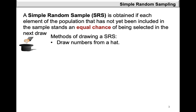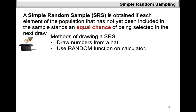Once you have these numbers, you can identify those elements from the population that are now going to consist of your sample. In the second method, you can make use of the random function on the scientific calculator.